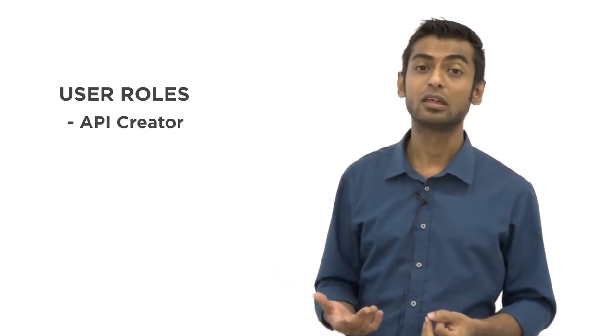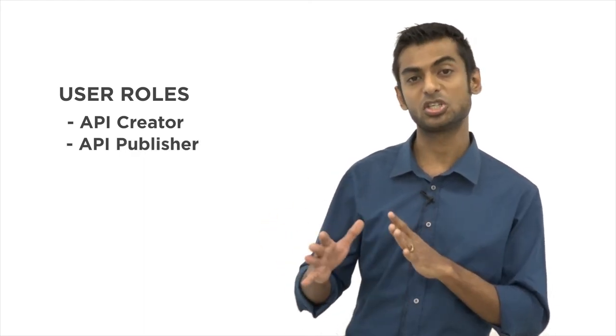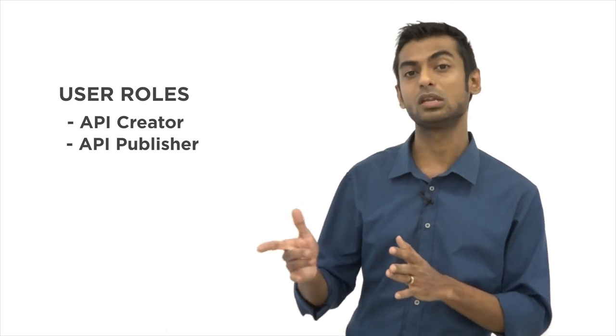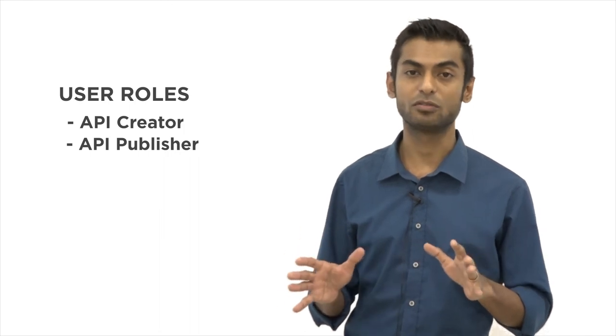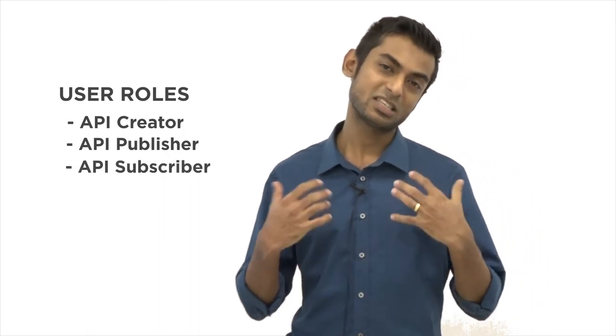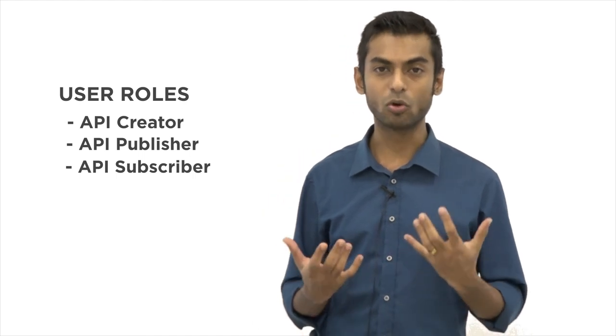And like we discussed in the previous example it is usually a business person with the authority to decide when an API should actually be exposed to the outside world who will actually have the API publisher role. So that's why we have a differentiation between these two roles because it's usually divided between two different kinds of users.